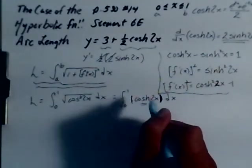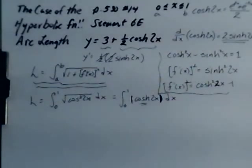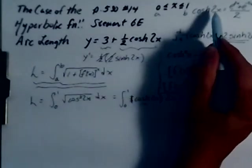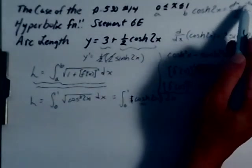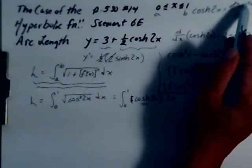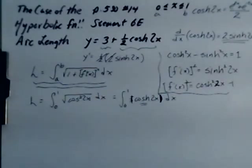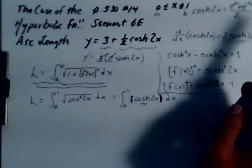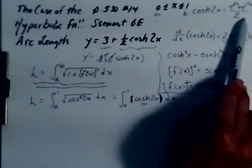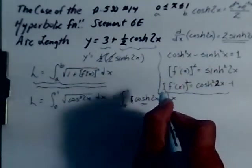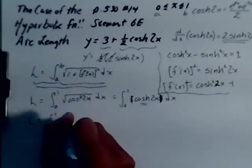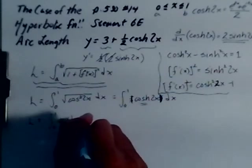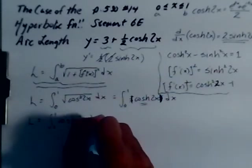Before we integrate that though, we will get rid of the absolute value. Because the cosine, e to the 2x is never negative. E to the minus 2x is never negative. The minus actually goes to the denominator. So it's never negative. The hyperbolic cosine is always going to be a positive value right here. So we can get rid of the absolute value. The arc length is equal to integration from 0 to 1 of cosine hyperbolic of 2x dx.